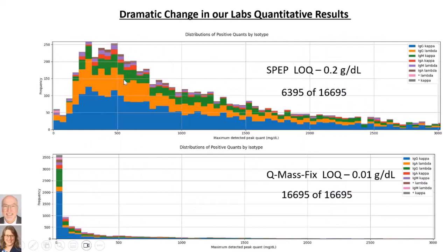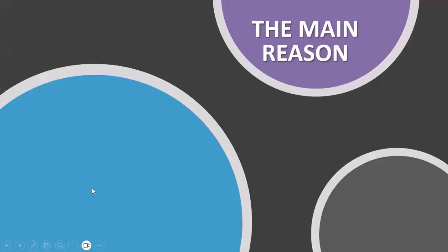This represents a significant shift. With SPEP's LOQ of 0.2 g/dL we reported a broad distribution of values. With our mass spec LOQ of about 0.01 g/dL, the majority of patients we see have very low-level disease — we report presence but not quantity at the lowest levels. This is a real improvement for patient care.